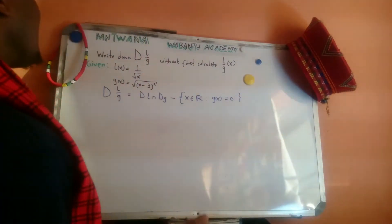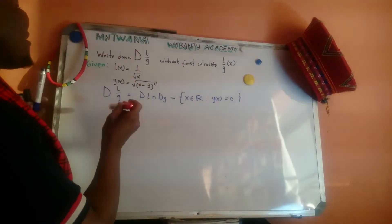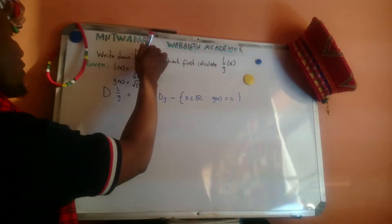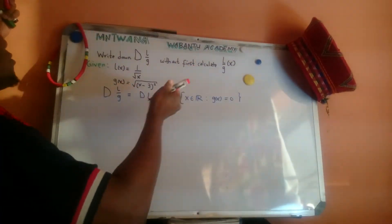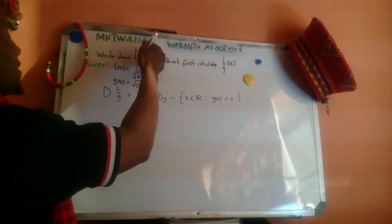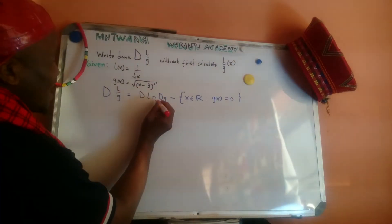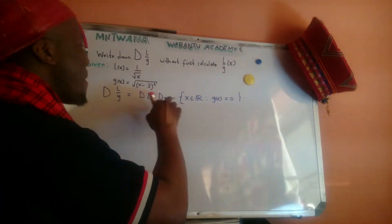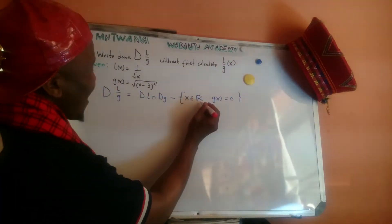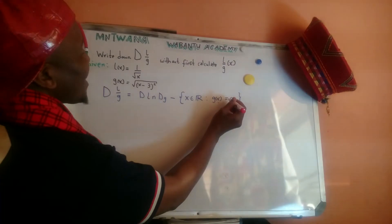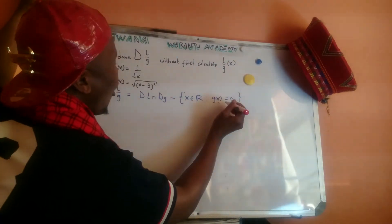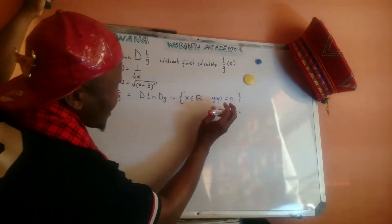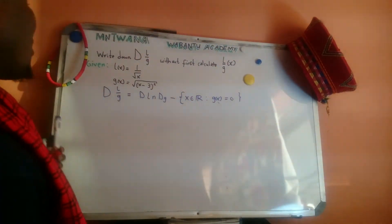Whenever you have a division like l over g, you take the numerator function — which is l — find its domain, then intersect with the denominator function's domain, and then subtract the x values where the denominator function equals zero. That's the formula.